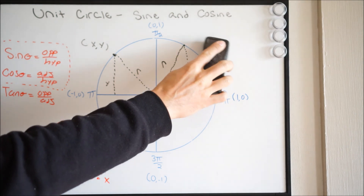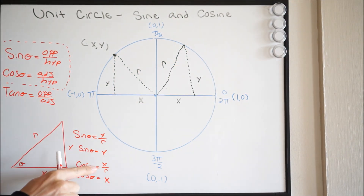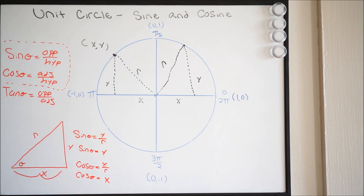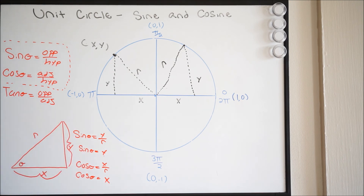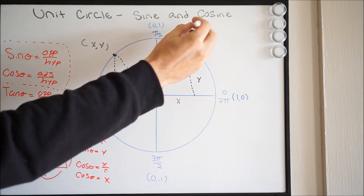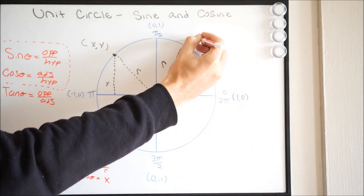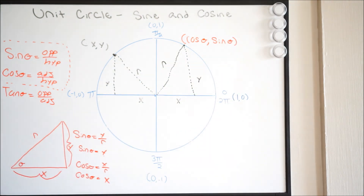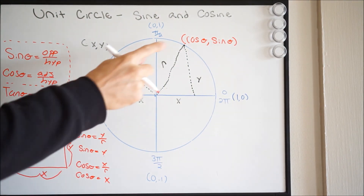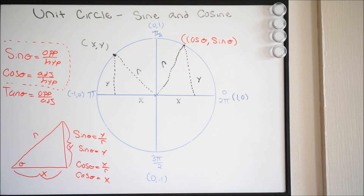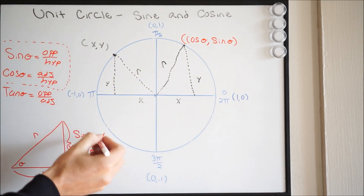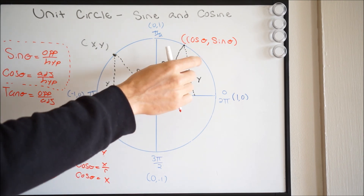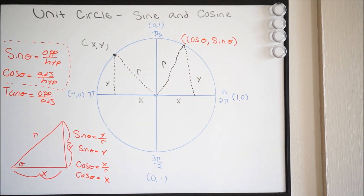So what this tells us is we can actually write these points around the unit circle the following way. Calling it (x, y), we know that cosine theta is going to represent x, and sine theta will give you the vertical — so this part here. So we can label this point as (cosine theta, sine theta). In other words, cosine theta is representing your x value, sine theta is representing your y value. And that's true as you go around this unit circle — no matter where you're at, it's always going to be (cosine theta, sine theta). And that is it. See you next time.